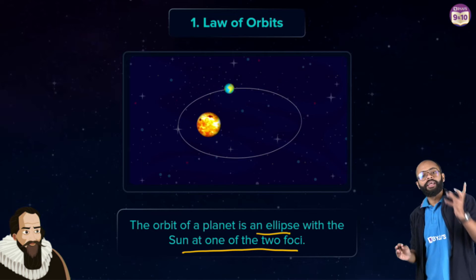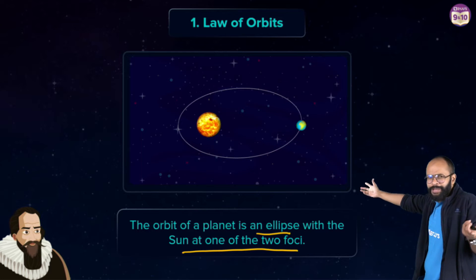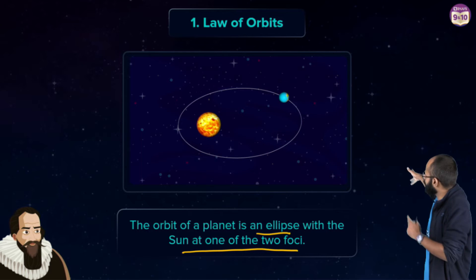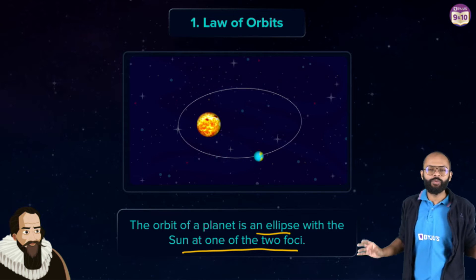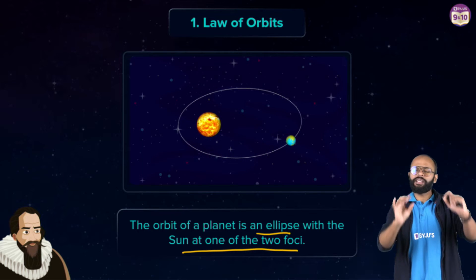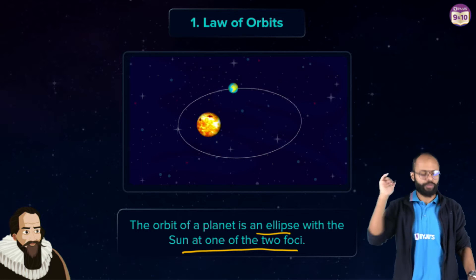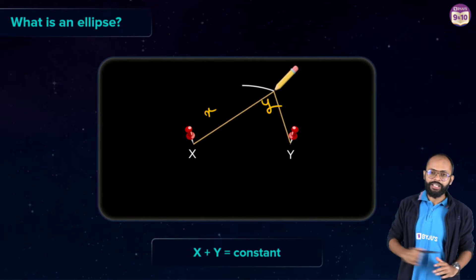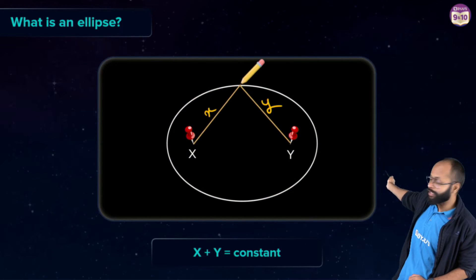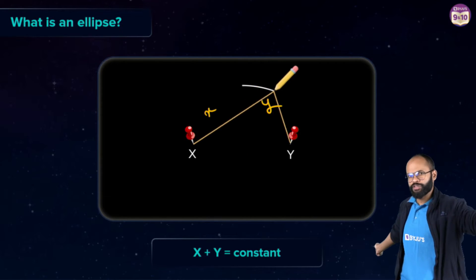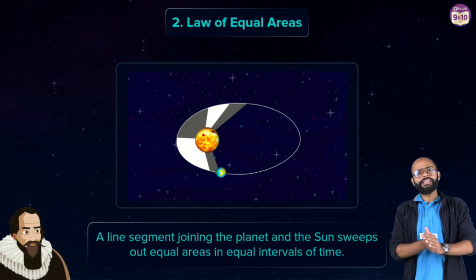For some planets the sun could be at one focus, for others at the other focus, but the path of any planet is an ellipse where the sun sits at one of the foci. In an ellipse, the sum of distances from the two foci to any point on the ellipse is always constant.